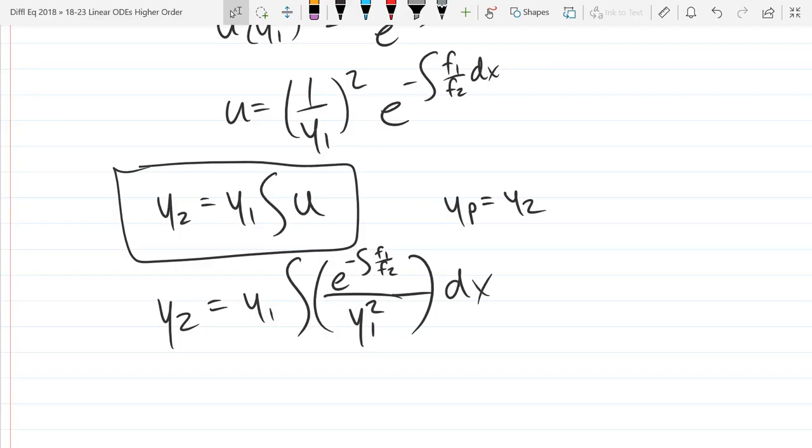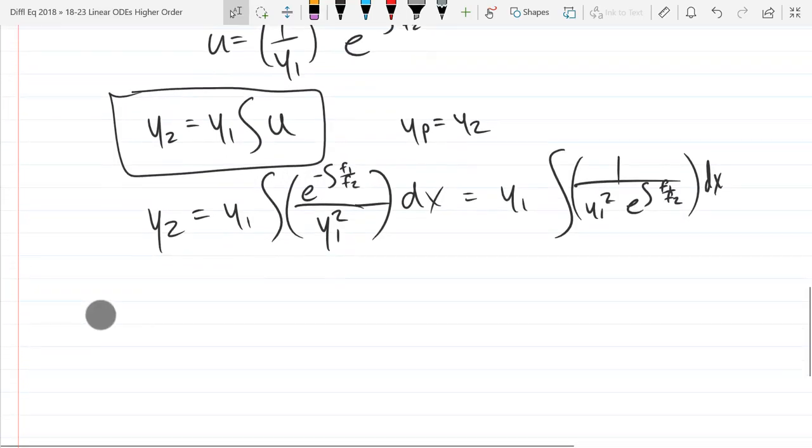And actually, e to that negative power, that's the reciprocal. You could write it as y1 integral 1 over y1 squared times e to the regular integral f1 over f2. Either way will work.